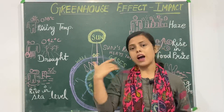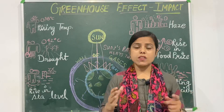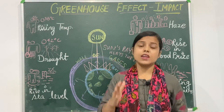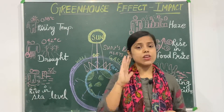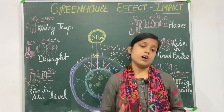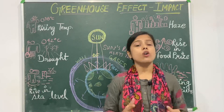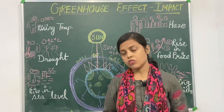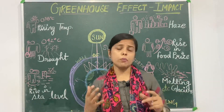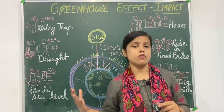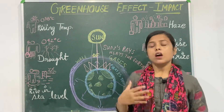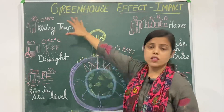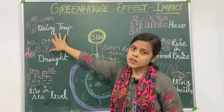When the temperature of the earth goes high, it becomes very hot — more than the required temperature. If heat is continually caught, the temperature is going to rise. When the temperature keeps rising, it will ultimately affect all living organisms on the earth. This rise in temperature is what we call global warming, and the first consequence of the greenhouse effect is a rise in temperature.